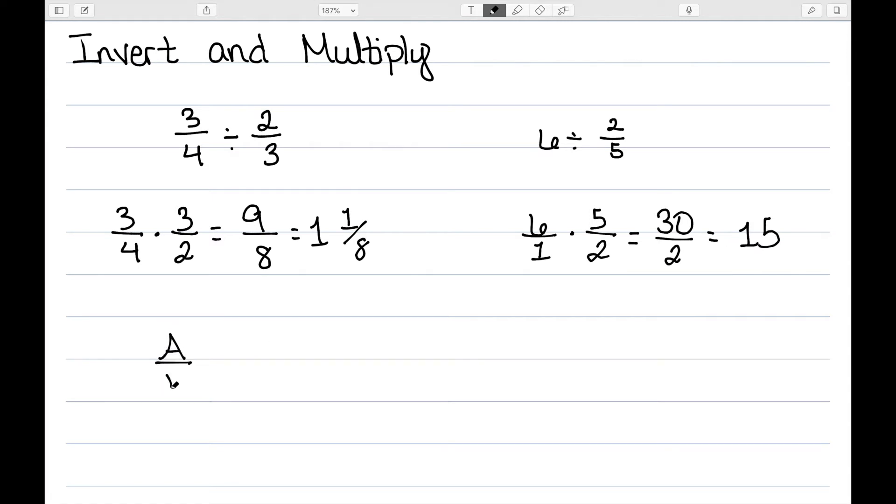In general, if we have a over b divided by c over d, this is the same thing as a over b times d over c, or a times d over b times c.